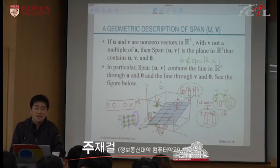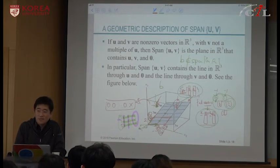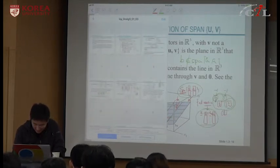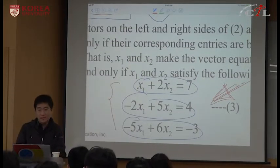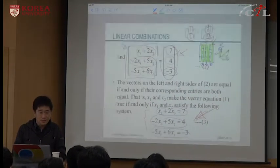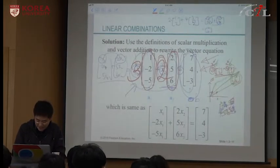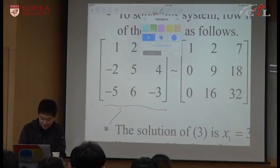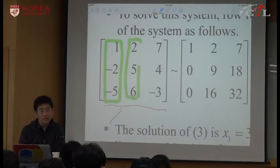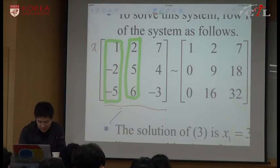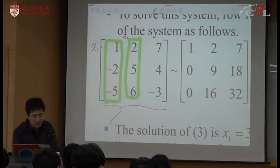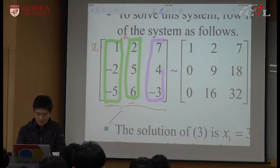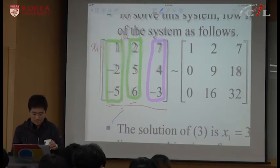Last time we studied the vector equation. Given a linear system, originally we considered a form composed of multiple linear equations. But this equation can be viewed as a single vector equation by treating each column in our augmented matrix. We have the first column vector and the second column vector, then multiply x1 times the first vector plus x2 times the second vector. This linear combination should equal the constant vector on the right-hand side.